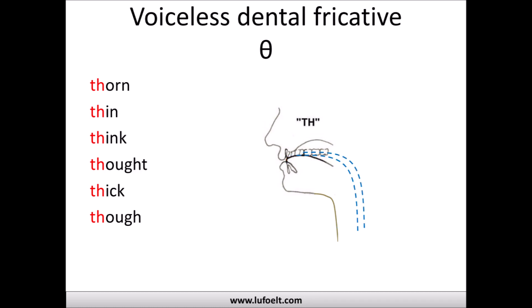Now let's take a look at the voiceless — sometimes called unvoiced — dental fricative sound. For this, the mouth position is the same, but this time you're not going to vibrate your throat. You're just going to pass air out of your mouth. Here are some example words: thorn, thin, thick, thought. The beginning sound is the voiceless dental fricative.